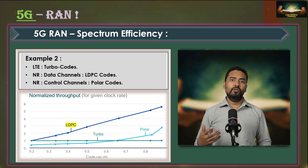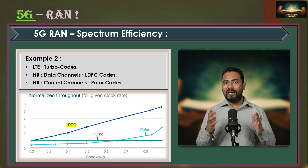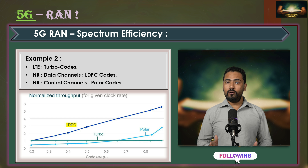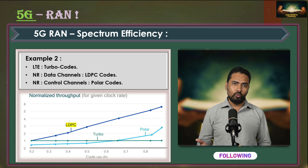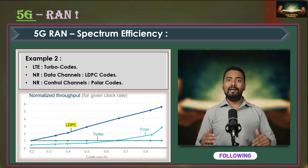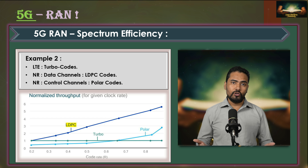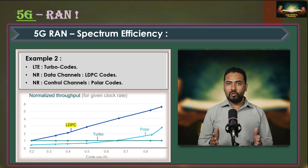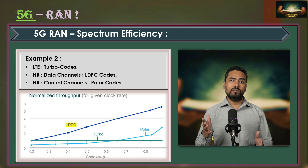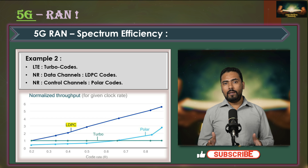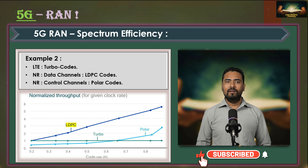Additionally, NR uses new channel coding options. While LTE relies on turbo codes, NR uses Low Density Parity Check codes or LDPC codes, which are significantly more efficient especially for large transport blocks, making them ideal for the data channels.